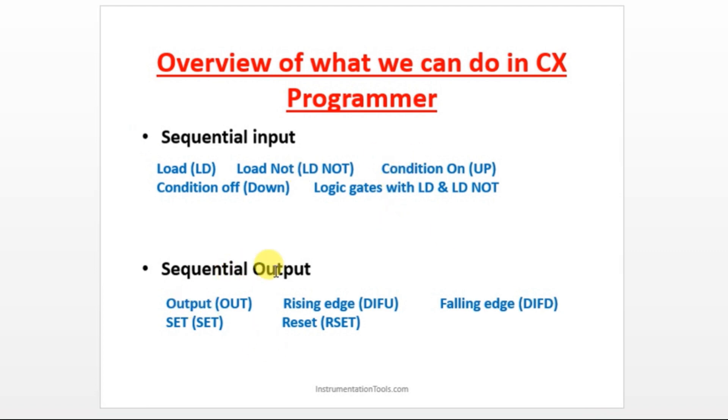This is the sequential output: OUT, which is nothing but a coil. This is the rising edge, called DIFU (differential up), and differential down is the falling edge. This is the reset bit and this is the set coil. These are all the input instructions and these are all the output instructions.